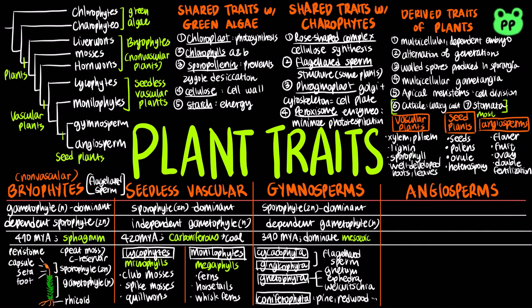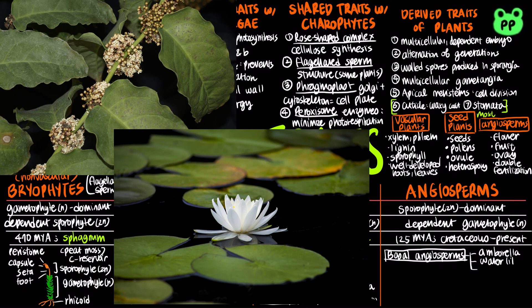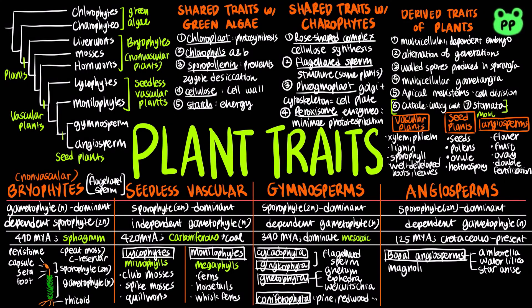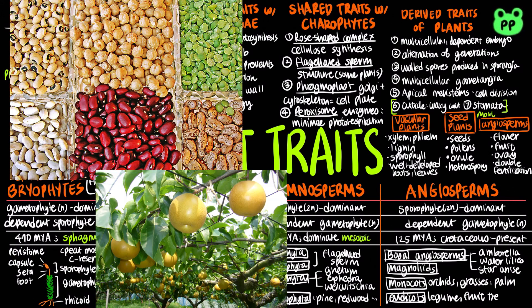The name angiosperm refers to seed contained in fruits. They are the most diverse and widespread of all plants, and include about 90% of all plant species. Like gymnosperms, they are sporophyte dominant and have microscopic dependent gametophytes. They date back to 125 million years ago, dominating the Cretaceous period till the present. There are four main groups of angiosperms. The oldest group is known as basal angiosperms; it includes Amborella, water lilies, and star anise. The magnoliids consist of magnolias, laurels, and black pepper plants. About one-quarter of angiosperms are monocots, which include orchids, grasses, and palms. More than two-thirds of angiosperms are eudicots, which contain the legume family, many edible fruit trees such as strawberry plants, apple and pear trees, and many flowering trees such as oak, walnut, maple, willow, and birch.